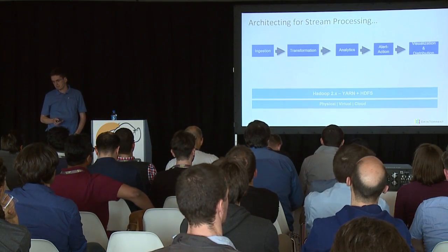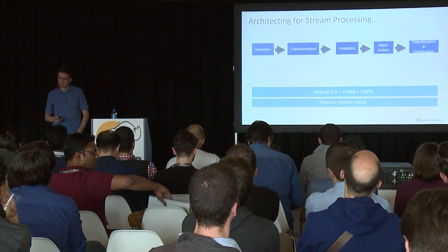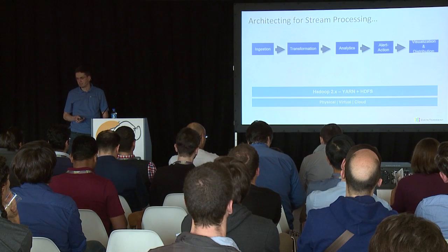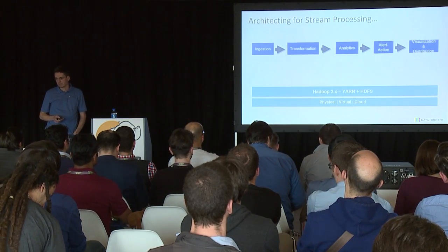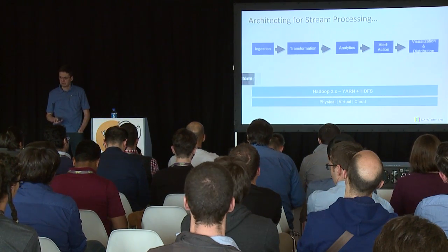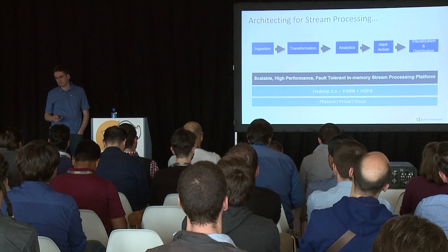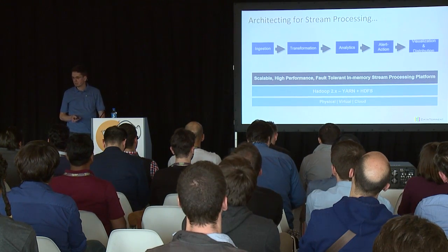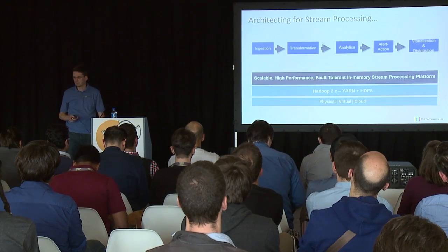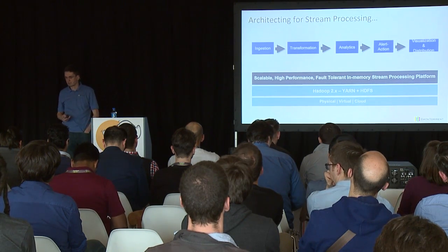What is the infrastructure it takes to do something like this? Yarn and HDFS form the data OS the way we look at it, and it can run on any infrastructure. As far as we are concerned, anything that is Hadoop 2.x will work. The platform for stream processing should be scalable, high performance, and fault tolerant — properties that are in line with the underlying promises of Hadoop, which was built exactly for the scale-out architecture on commodity hardware.